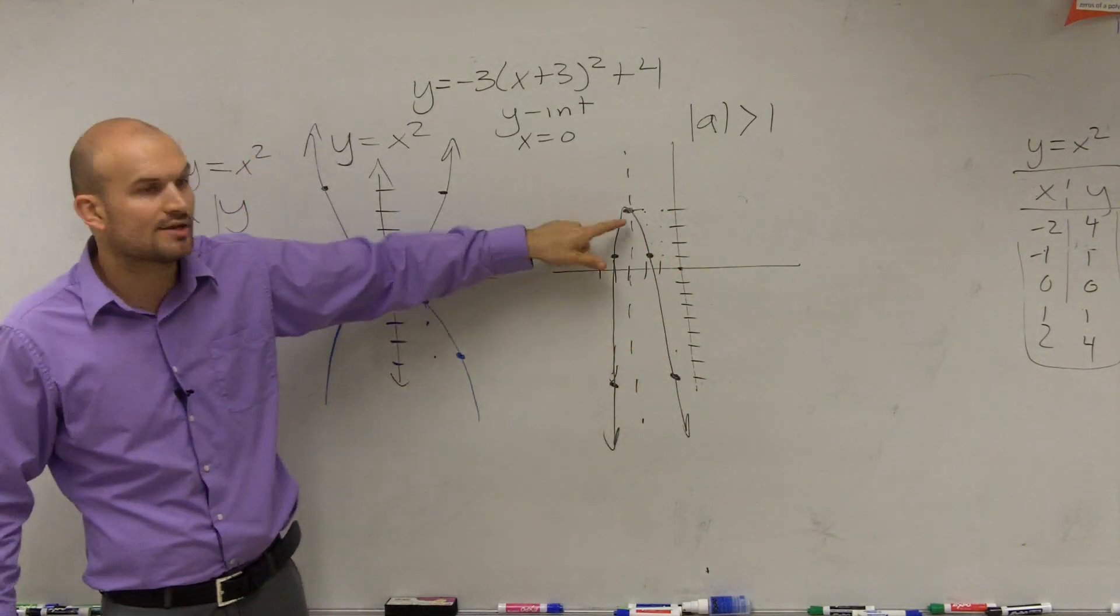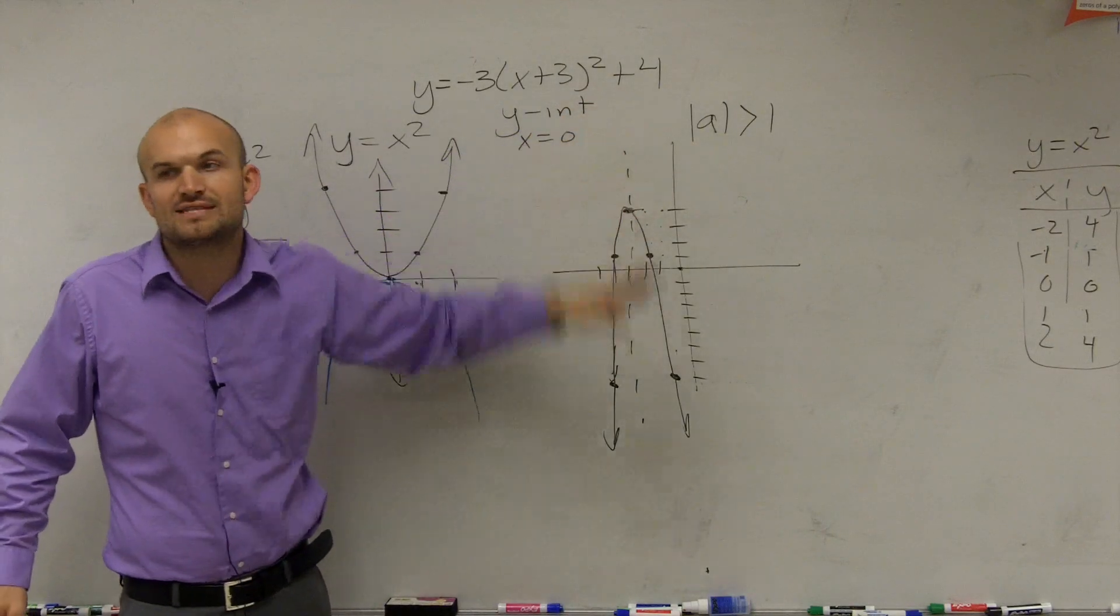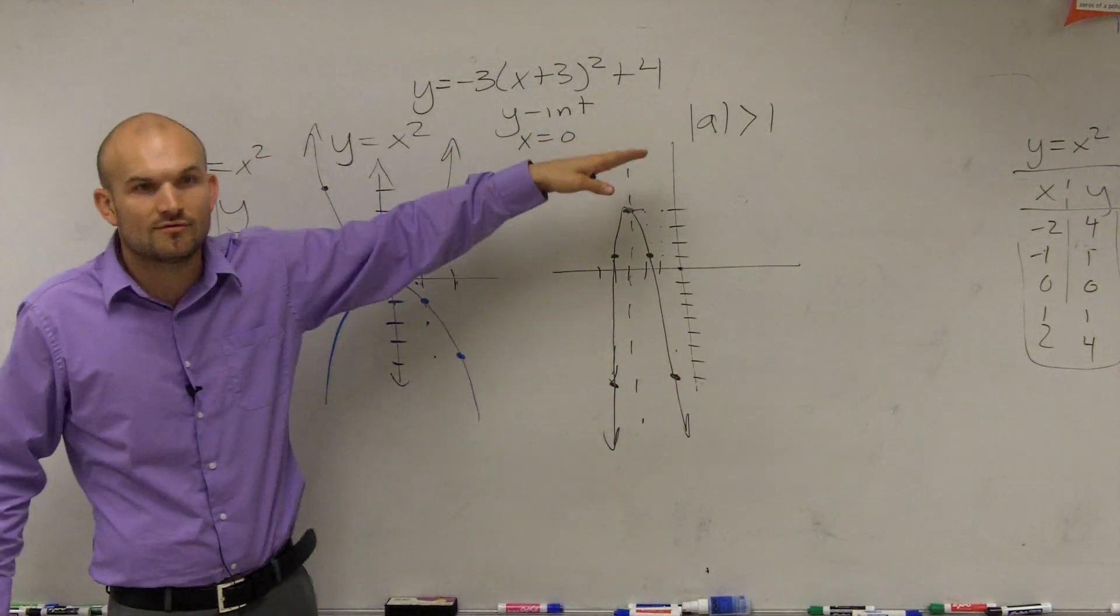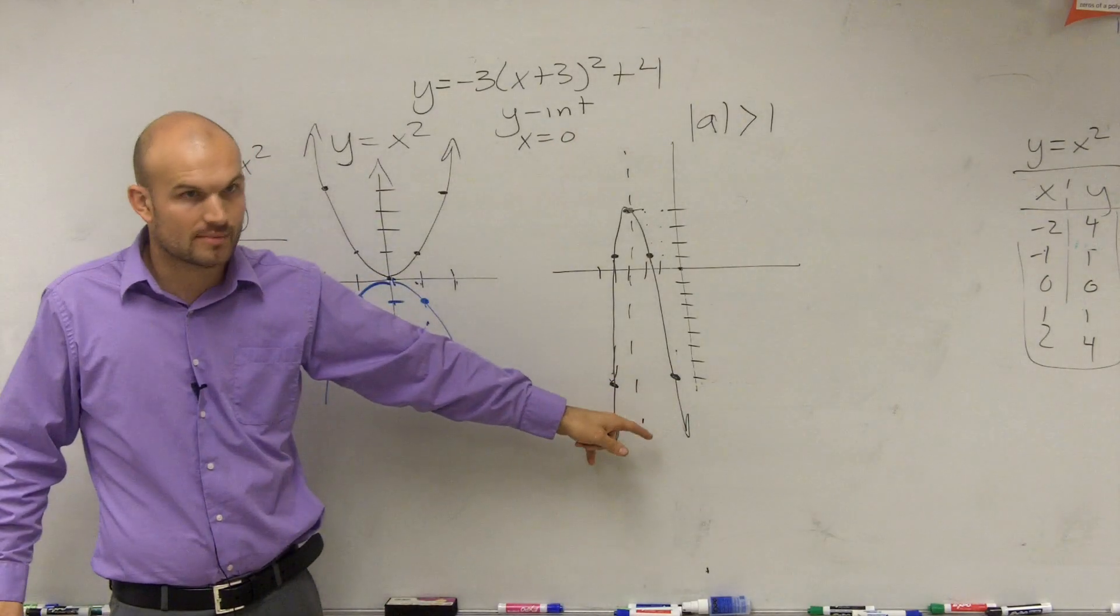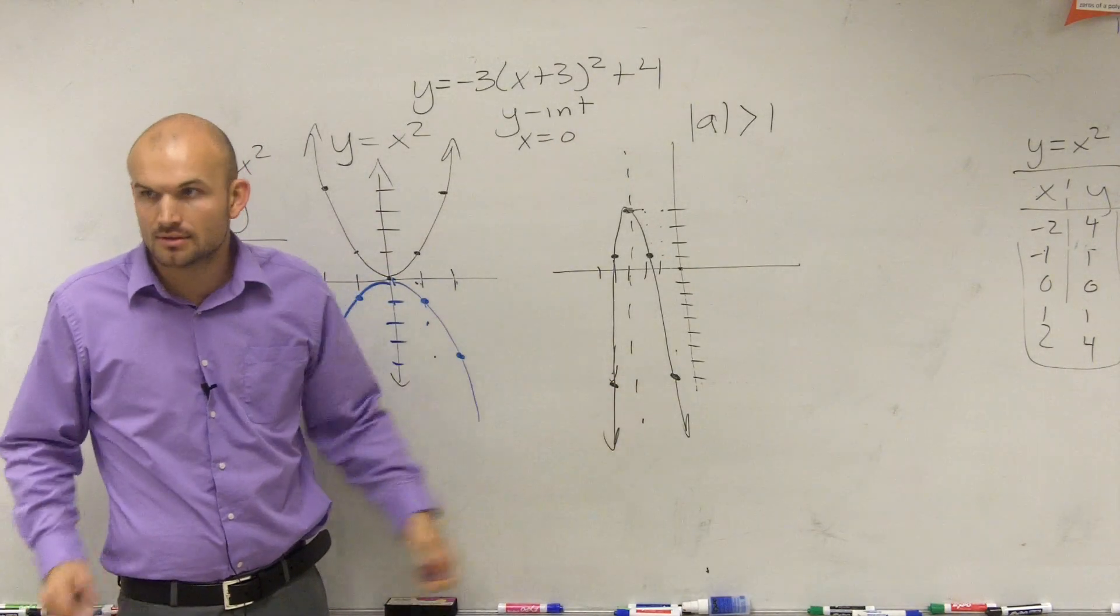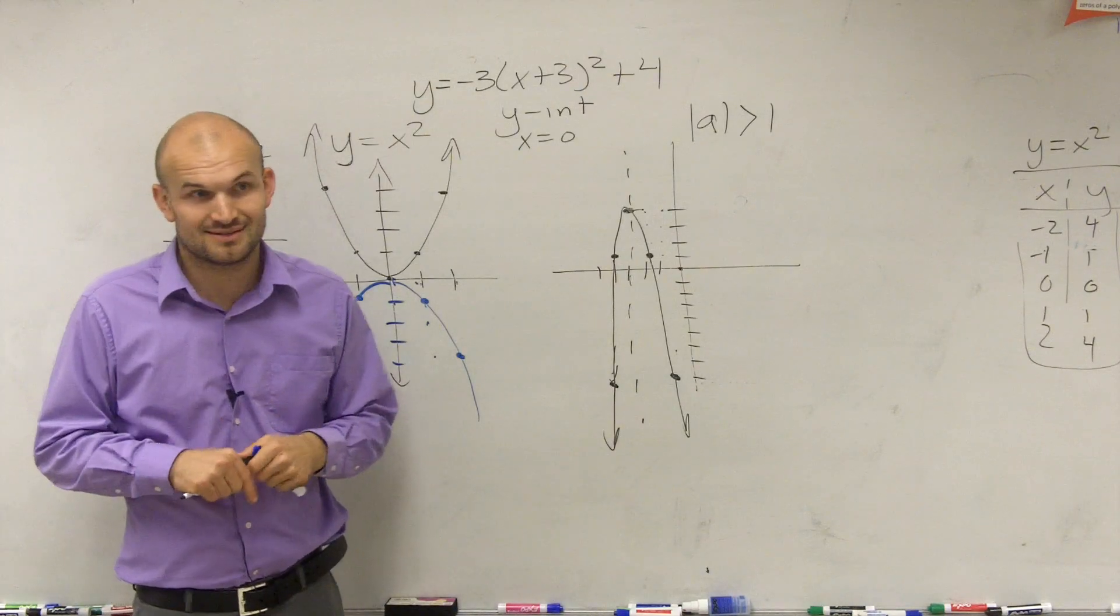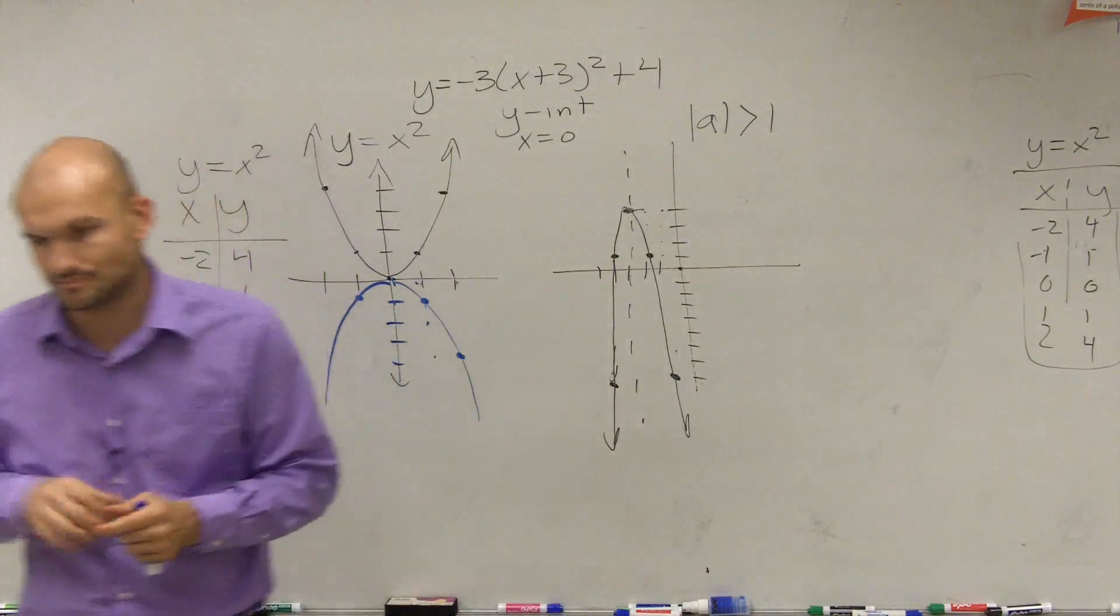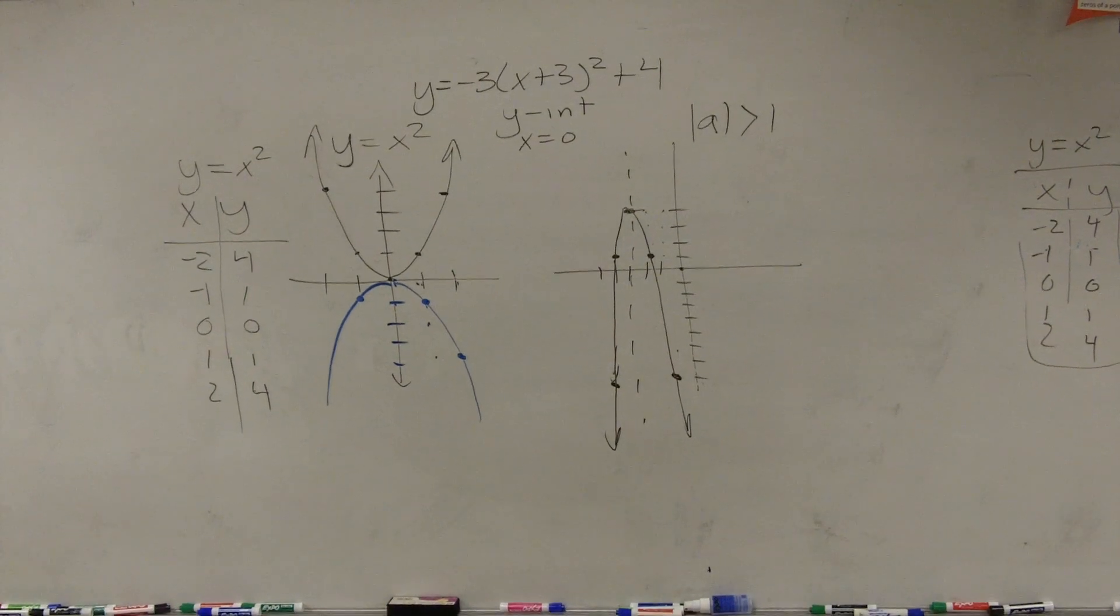But now I'm going to multiply it by 3. So I go over 2, down not 4, but down 4 times 3, which would be down 12. And remember, I'm starting from my vertex, which was already up 4. So if I go down 12 and I started at up 4, I should be at negative 8. Good. Questions? You guys want to do an easier one first? Which one would you guys like me to do?